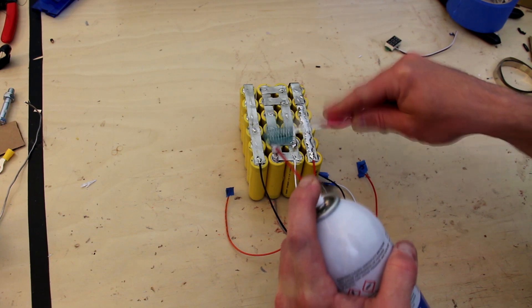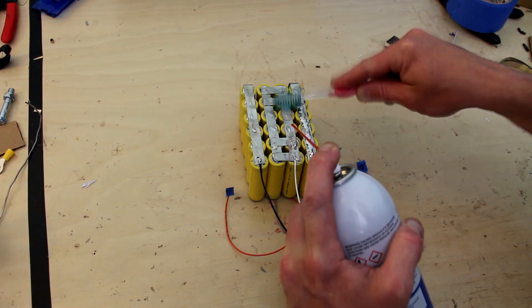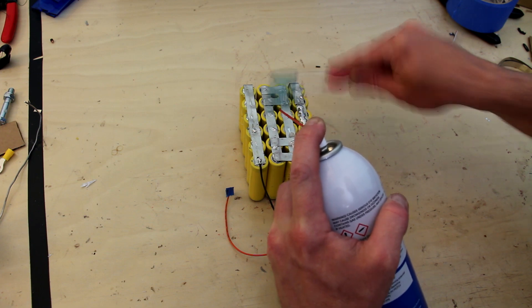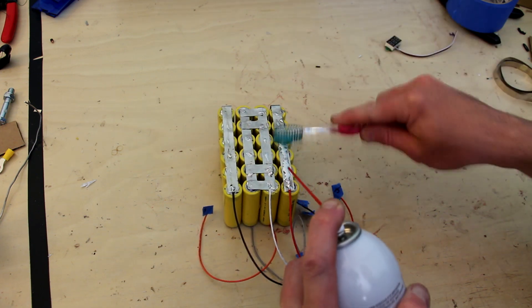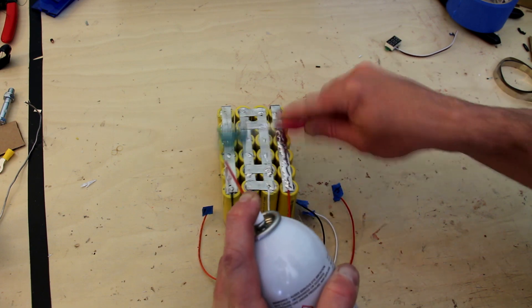Before moving on I want to clean up all the flux residue off of the battery leads. Flux is corrosive and can lead to premature failure of the battery. To do this I'm simply using spray-on flux cleaner and a toothbrush, and then I'll simply dab it off with a paper towel when it's done.